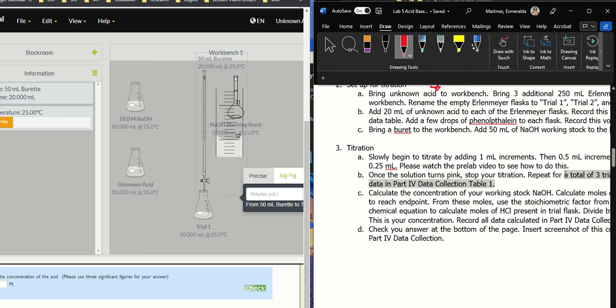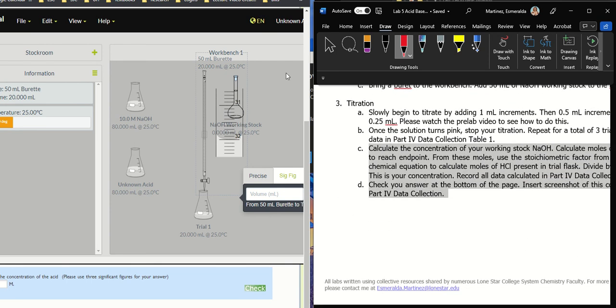And you're going to repeat this for a total of three trials. And obviously collect the data in your table 1. From here is a bunch of calculations. Okay? So that pretty much right here on A, once you complete your three trials, that ends the actual lab stuff. From there, it's a bunch of calculations. So let's go ahead and talk about that.